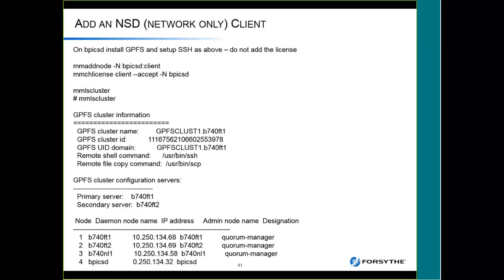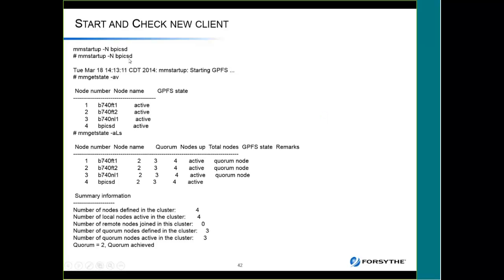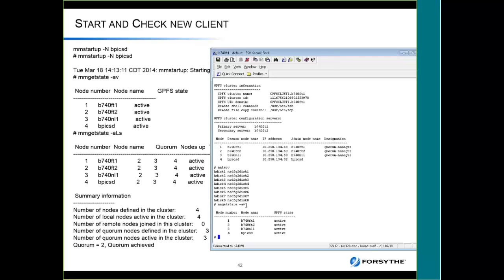We add a client node. Install GPFS and set up SSH on the client node, then from the primary run the mmaddnode command to add BPICSD as a client node and accept the client license for that node. When you do your MMLS cluster, you'll see BPICSD shows up as a client LPAR — it's not a quorum manager or administrative node. Start it up and do mmgetstate -av and it shows up as active. All four nodes show active — that's what we want to see.